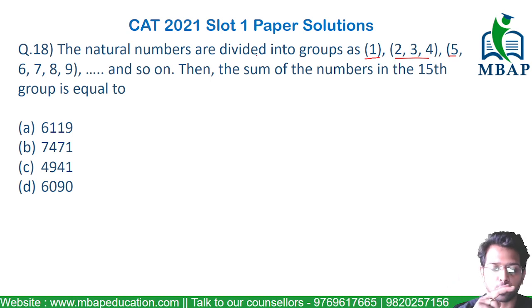There are two things we have to find out: one, what are the number of terms in the 15th group, and second, what are the terms in the 15th group. Obviously they are all consecutive numbers, so taking the sum will be the sum of an AP for which we need to find out the answer.